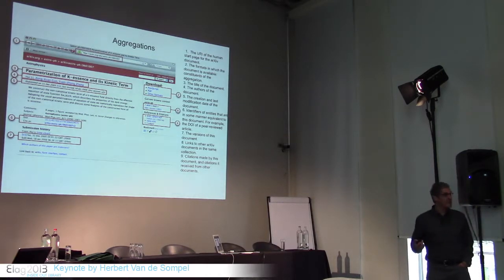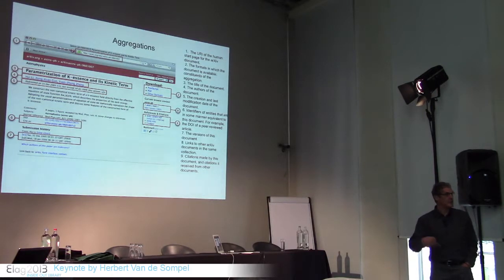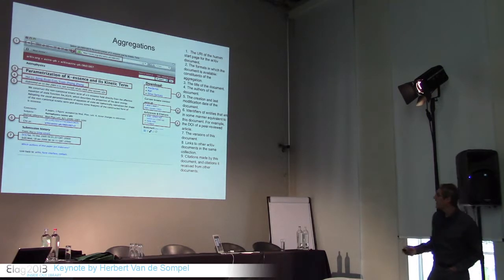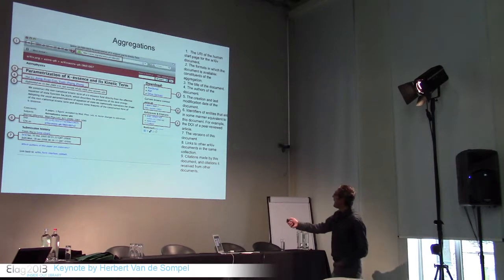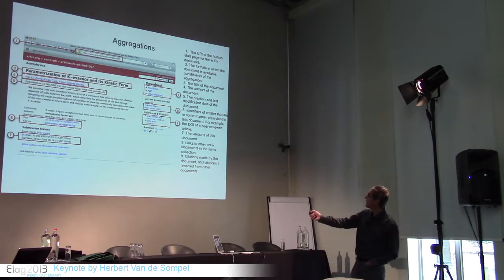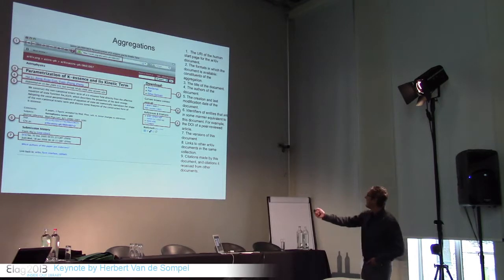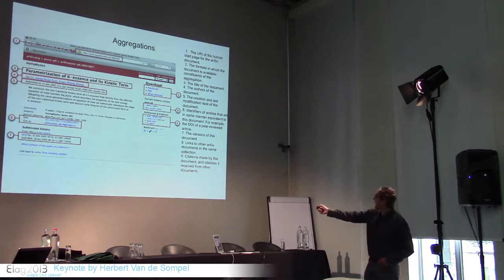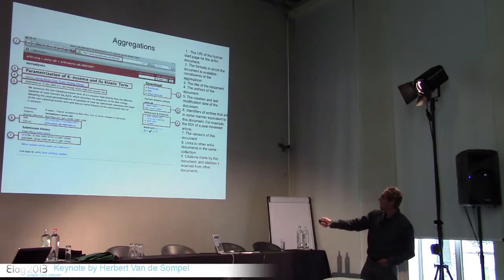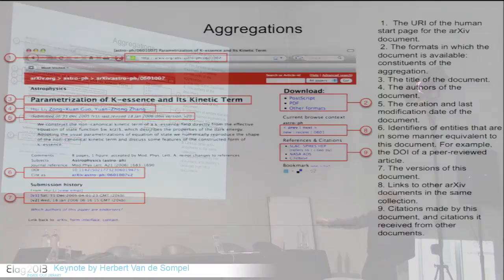Looking at an object in the physics archive, you can already see this compoundness and variety of relationships and interdependencies. You have a URI for the splash page — which is obviously not the URI of the asset itself — you have the asset itself in different formats, and you have different identifiers related to this thing.